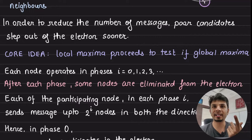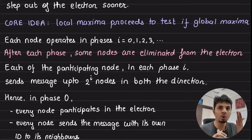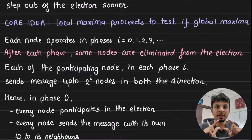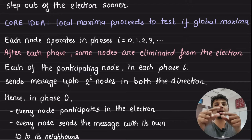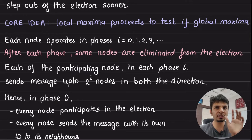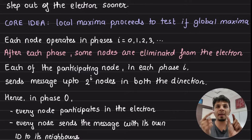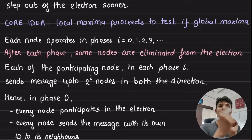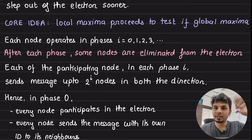Here we introduce the concept of local maxima and global maxima. A node needs to know if it is at least the local maxima — if it is, it has a chance of surviving to become the global maxima. The core idea is that every node will find out: am I the local maxima in a neighborhood of 1? Neighborhood of 2? Neighborhood of 4? Neighborhood of 8? If so, it is continuously surviving to potentially become the global maxima.